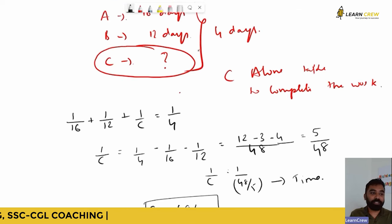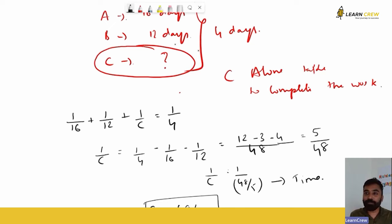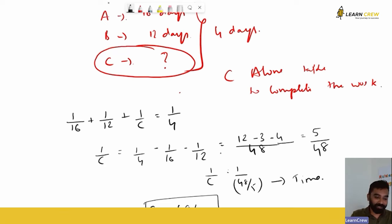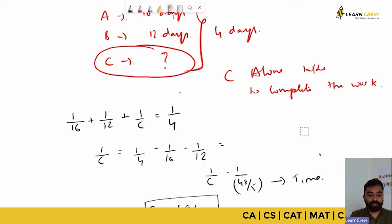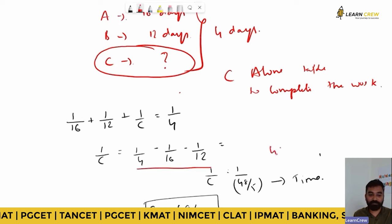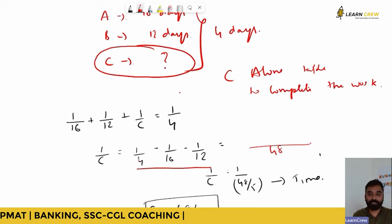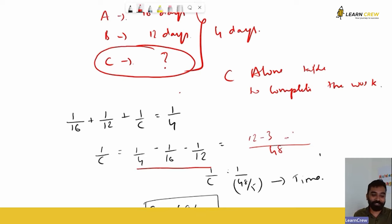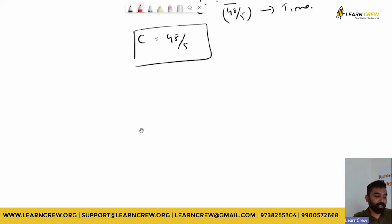So we were given the number of days taken by A and B to complete a work, and told that all three together finish it in 4 days. We found C alone takes 48/5 days. The LCM of 4, 16, and 12 is 48. Multiplying 4 by 12 gives 48, 16 by 3 gives 48, 12 by 4 gives 48. If the concepts are clear, proceed to your questions.